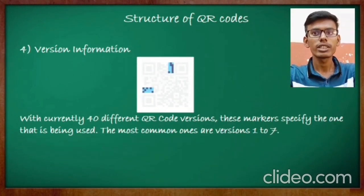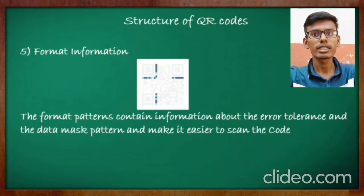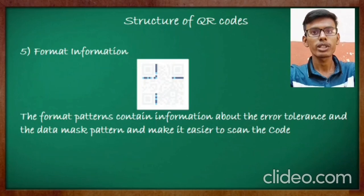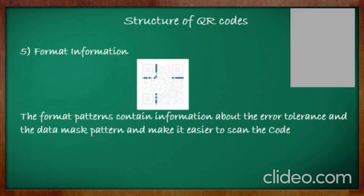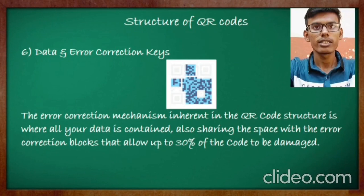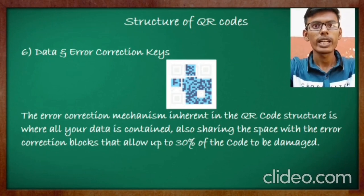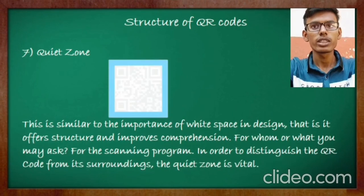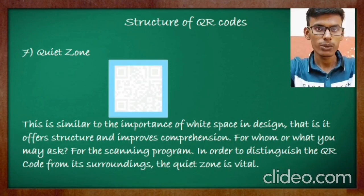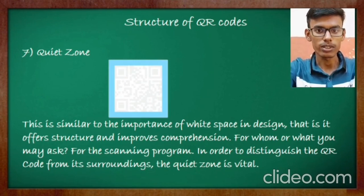Currently there are 40 versions of QR code; the most common ones are versions 1 to 7. The format pattern contains information about error tolerance and makes it easier to scan the data. The data and error correction keys contain most of the data. The quiet zone improves the comprehension of the QR code.